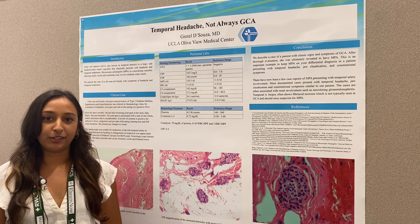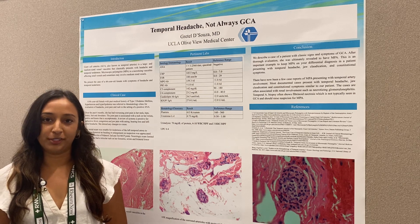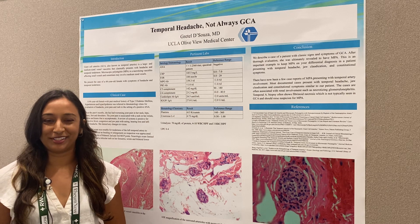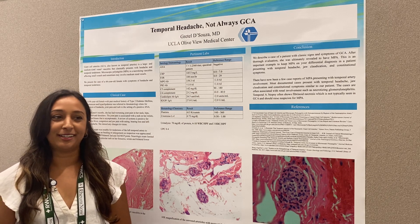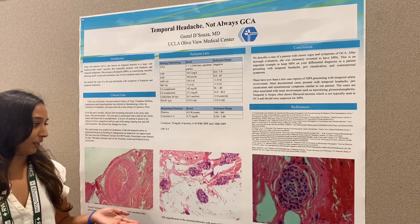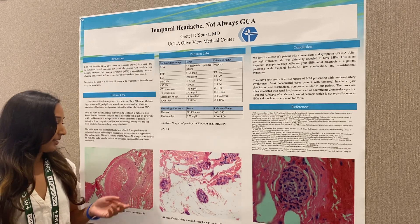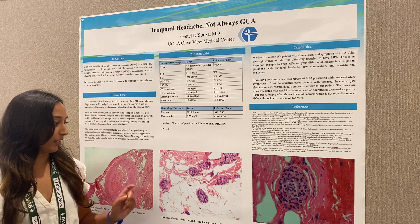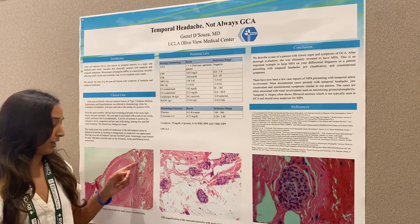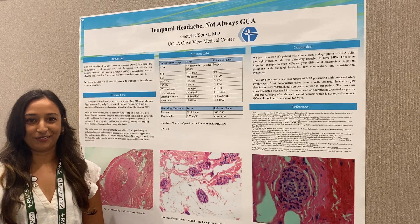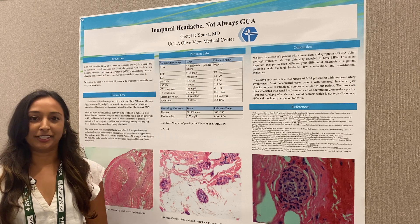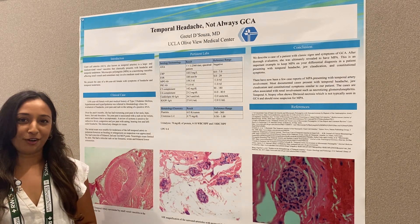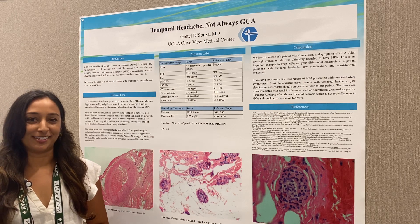We did a temporal artery ultrasound that was completely normal and did not show halo sign. We then followed that up with a temporal artery biopsy — I have a few slides here of her pathology report. The temporal artery was completely normal, but the arterioles surrounding the temporal artery and the perivascular fat were completely infiltrated with neutrophils. It was read as a small vessel leukocytoclastic vasculitis.